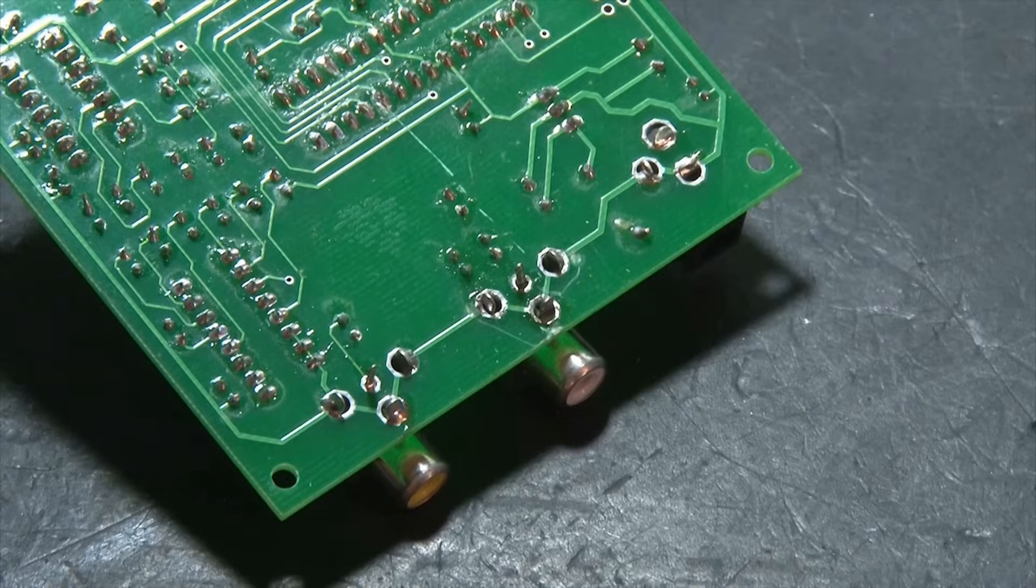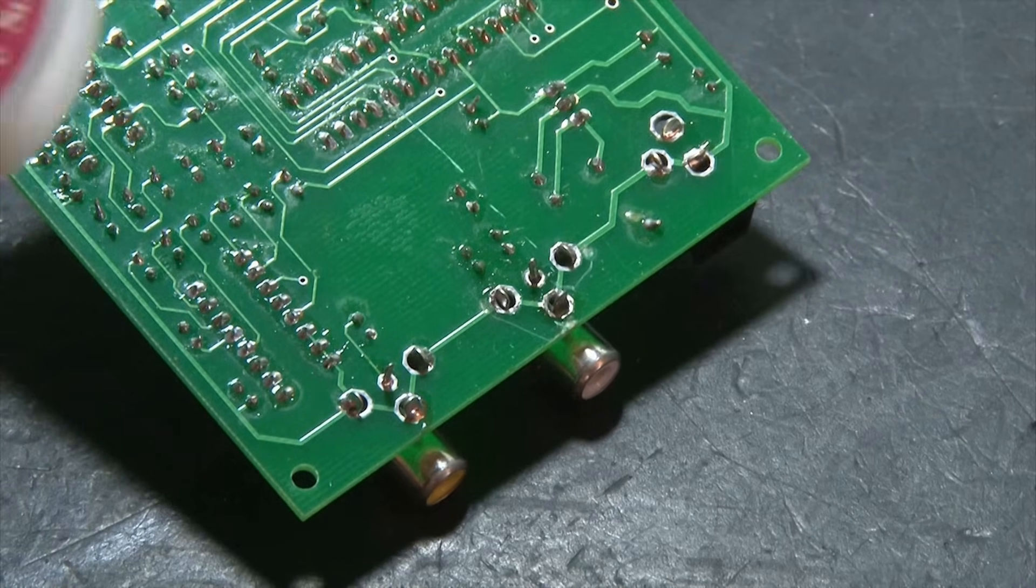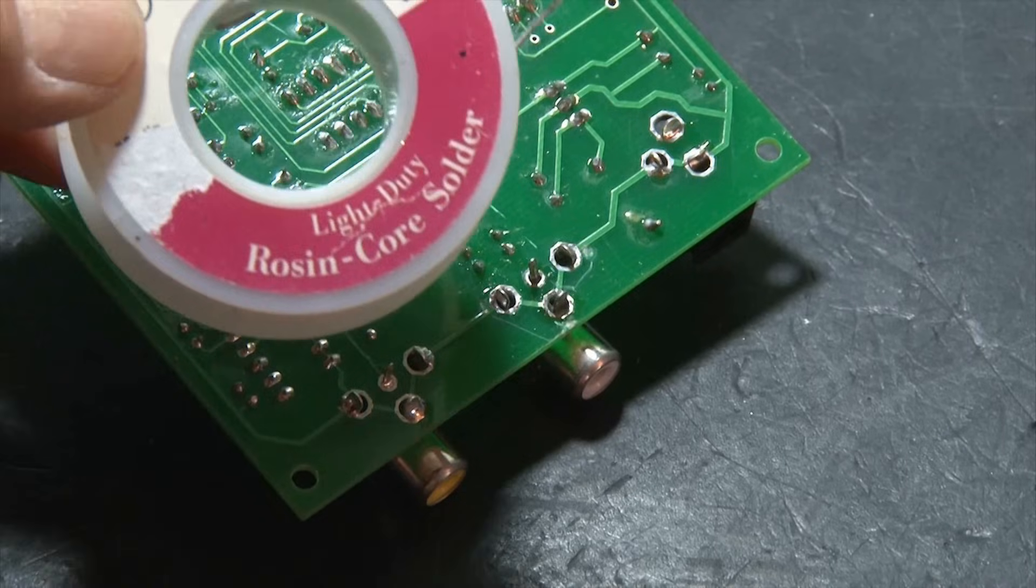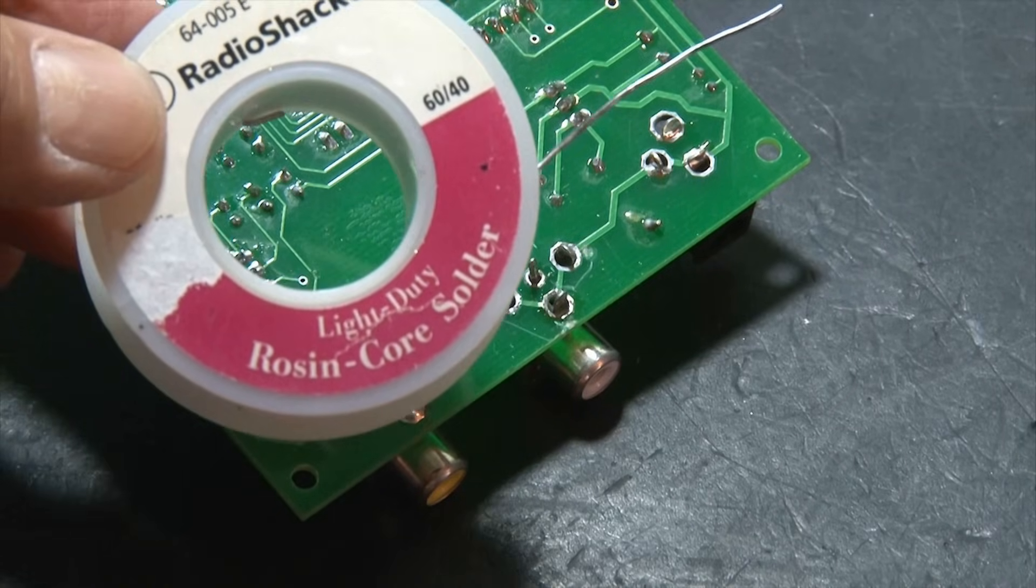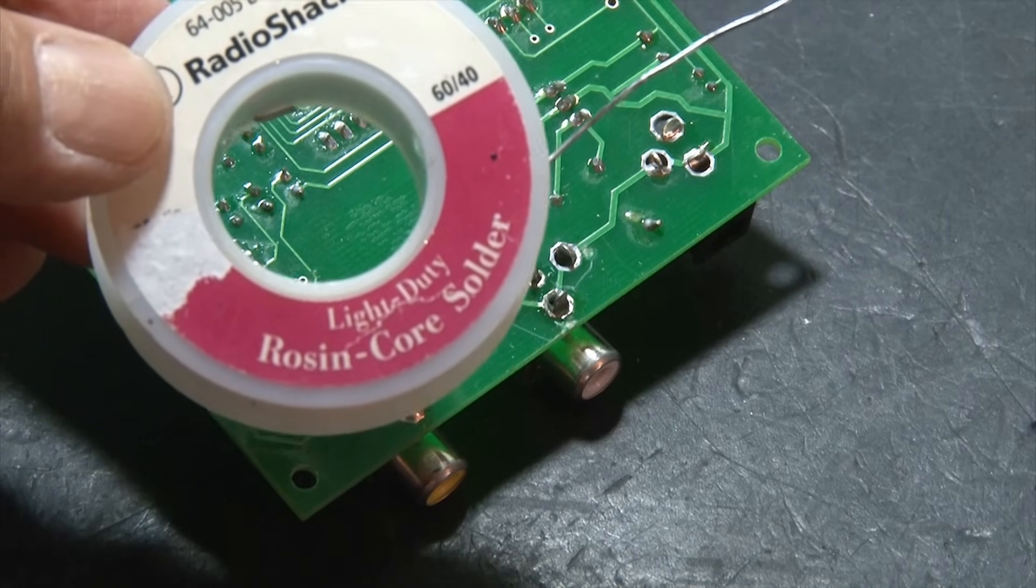Here we're going to solder an audio jack into a board with four pins. Now I like to use the larger gauge or smaller diameter solder, just because I think it's easier to use, but your preference may be different as you get more experienced in soldering.